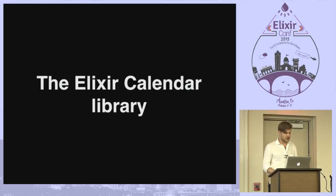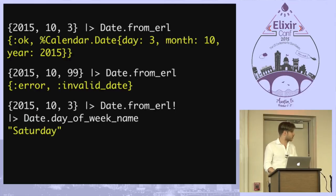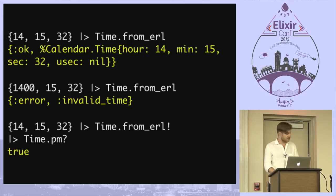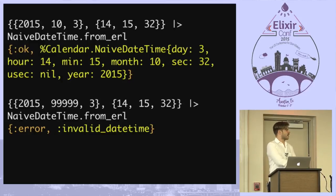I'm going to go through the Calendar library. You can provide a tuple with a date and you get a struct, and it validates it — so if you write something wrong, it gives you errors, which is good. There are all kinds of functions: it can tell you the day of the week, for instance. Similarly for time — it will give you errors if you provide something wrong, and it can tell you AM and PM. If you don't have a time zone, don't invent one; you want to use the naive datetime type.